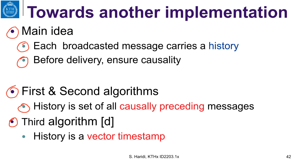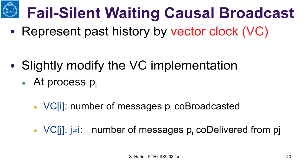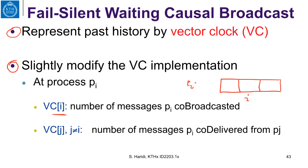We represent the past history by a vector clock, which is slightly modified as follows. Say we have three processes, and at process Pi the field at position i in the vector clock is the number of messages that Pi has causally broadcast. The other elements of the vector, where j is not equal to i, is the number of messages Pi has causally delivered from Pj.